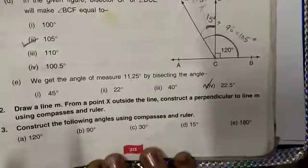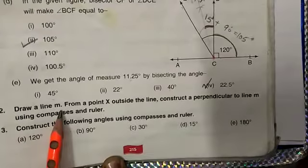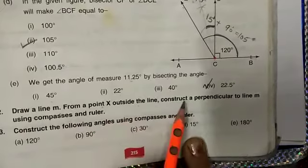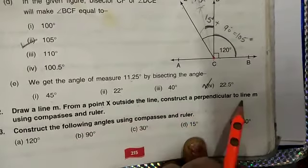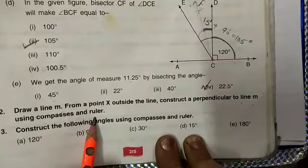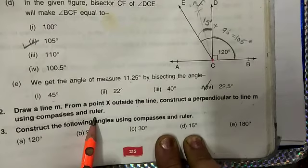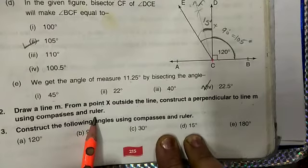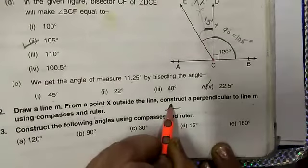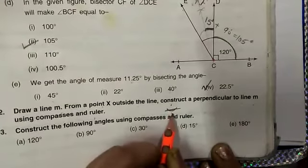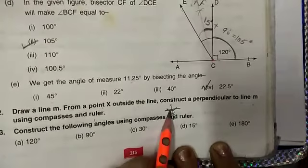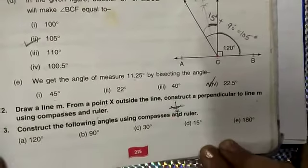Second question. Draw a line M from a point X outside the line. Construct a perpendicular to line M using compass and ruler. This concept I have already discussed in my previous lecture in worksheet number 4. That is, we are given a line from a point outside, we have to construct a perpendicular. In this way we have done the perpendicular. We will do the same. You will do this question yourself.